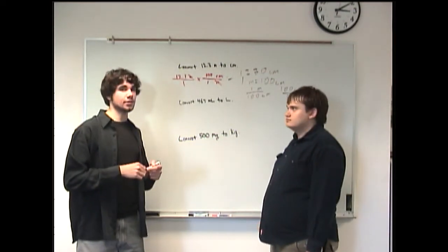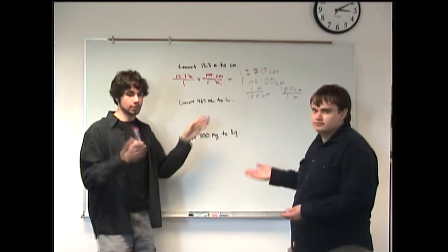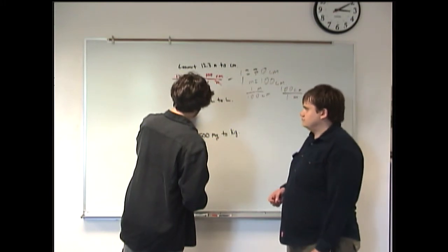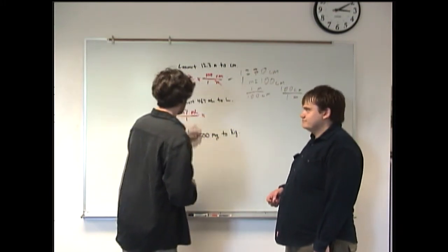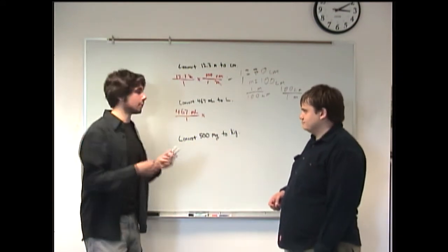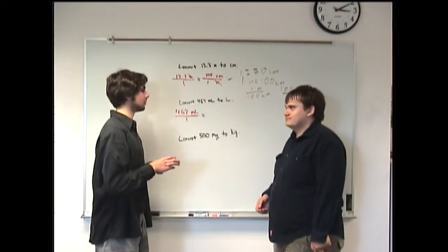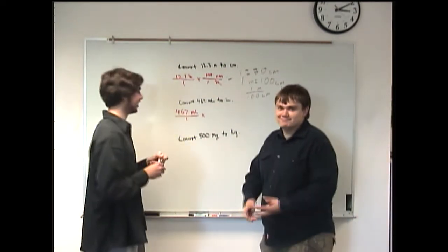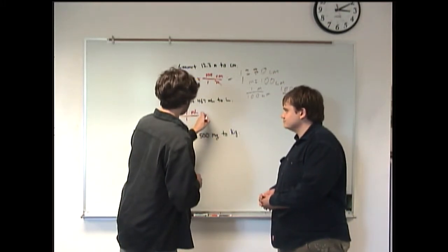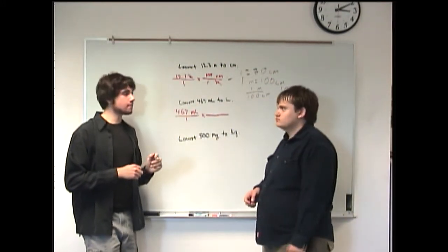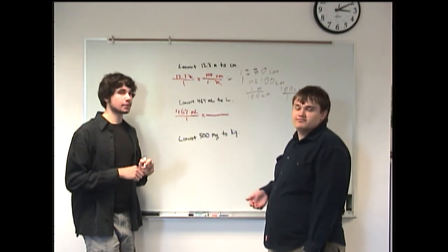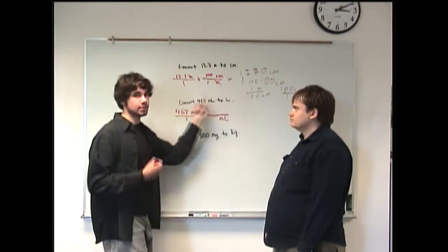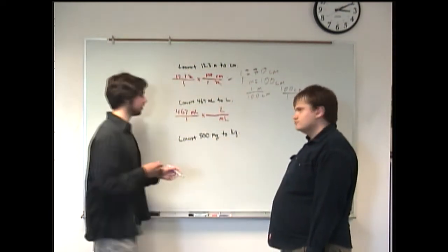Next: 467 milliliters to liters. Again, we're given a number — we'll start with that and put it over one: 467 milliliters. So we're trying to get rid of the milliliters, so they go on the bottom. We want liters, so they go on top — the only spot left.